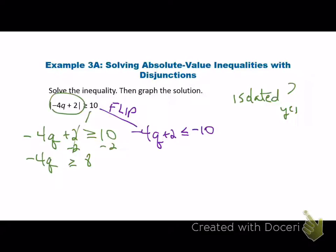Divide by negative 4. You have to copy the notes — just what I showed you. What are we doing? Dividing by negative 4. Okay, so our Q — what happens when we divide by negatives? The sign flips. So this is going to become Q greater than or equal to negative 2.